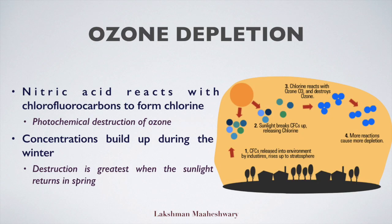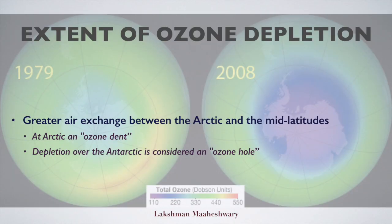One of the most threatening side effects of polar vortices is ozone depletion. Nitric acid in polar stratospheric clouds reacts with chlorofluorocarbons to form chlorine, which catalyzes the photochemical destruction of ozone. Chlorine concentrations build up during the polar winter, but ozone destruction is greatest when sunlight returns in spring. Since there is greater air exchange between the Arctic and mid-latitudes, depletion at the North Pole is much less severe than at the South Pole. At the Arctic, it is usually considered an ozone dent, whereas the most severe ozone depletion over the Antarctic is considered an ozone hole.